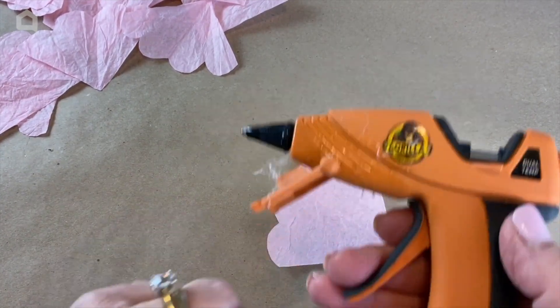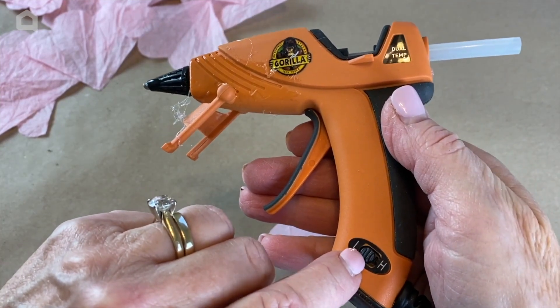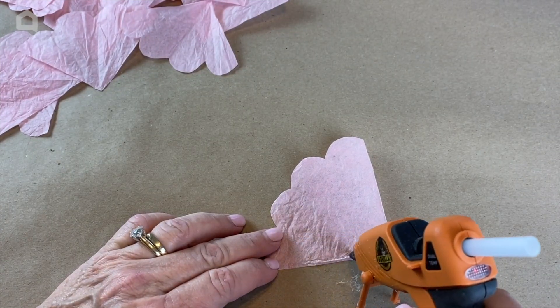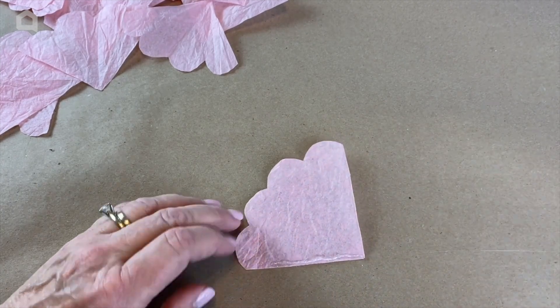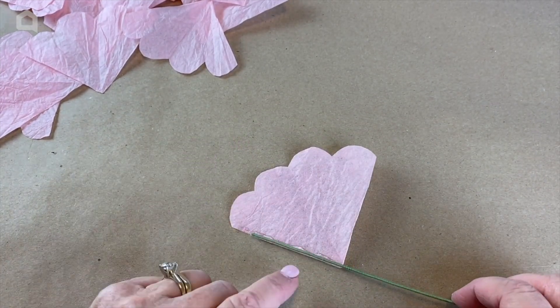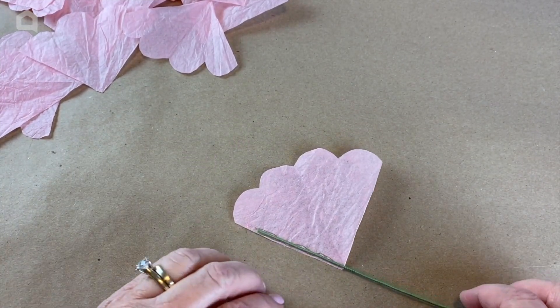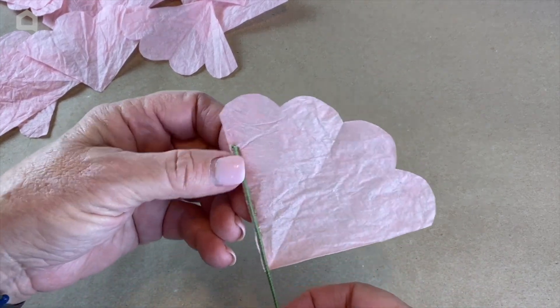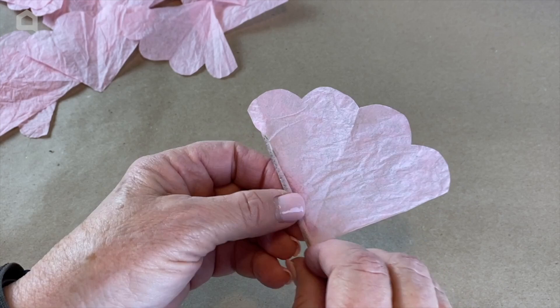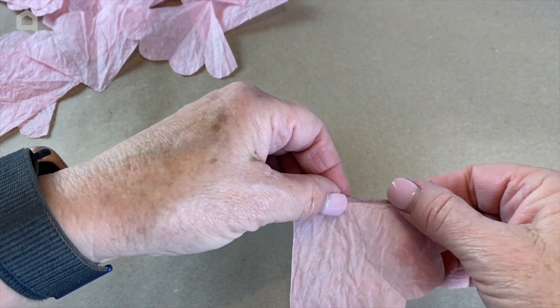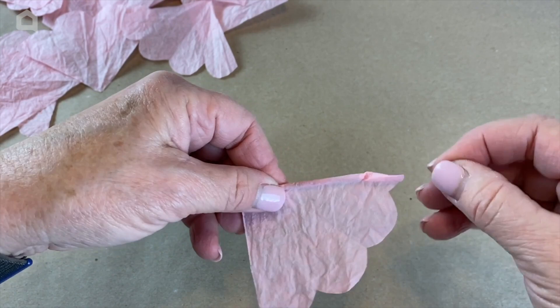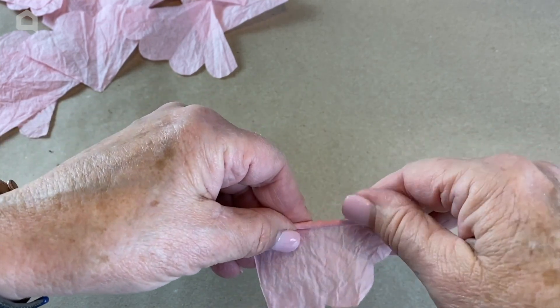We're going to take our first piece and low temp glue gun. You want low temperature right there because you're going to be putting your hand on here a lot and I don't want you to get burned. So we're going to put a little bead of glue right there and we're going to lay that stem right down on it. And then you're just going to wrap that and see with it being low temperature, it's not going to burn me. And we're going to go and wrap this as tightly as we can right around our first petal.